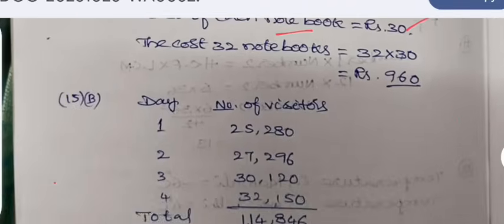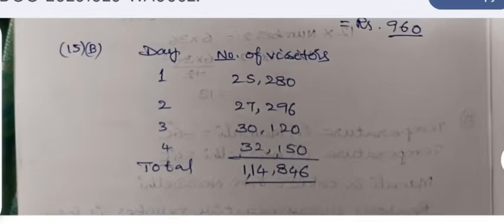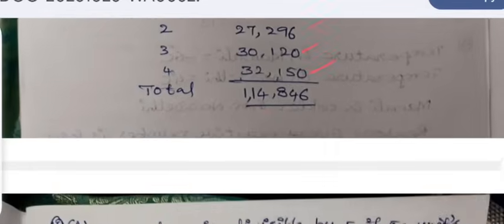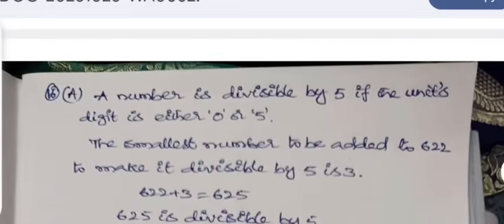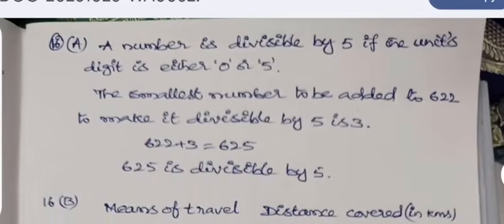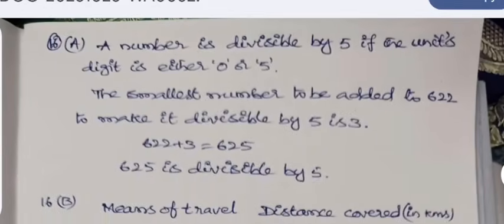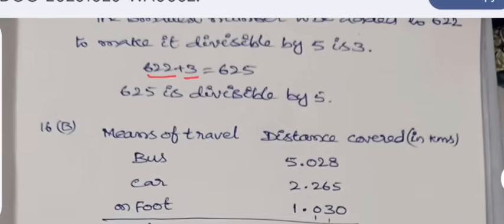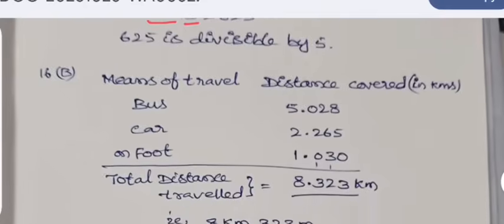For 15B question, the number of persons visited on these four days are taken and added. The number comes out to be 114,846. The number is divisible by 5 if the units digit is 0 or 5. Here the number is 622. To make the units place 5, three should be added, that is the least number. Then it becomes 625 and it is divisible by 5.